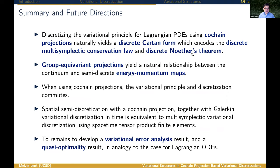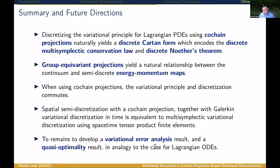To conclude: discretizing the variational principle for Lagrangian PDEs using co-chain projections is natural and leads to a discrete Cartan form encoding the multi-symplectic conservation law and the discrete Noether's theorem. Group equivariant projections give a natural relationship between continuum and semi-discrete energy-momentum maps. With co-chain projections, the variational principle and discretization commute. Spatial semi-discretization using a co-chain projection combined with Galerkin variational discretization in time is equivalent to a multi-symplectic variational discretization using space-time tensor product finite elements. What remains is to develop a corresponding variational error analysis and quasi-optimality result, in analogy with the case for Lagrangian ODEs.